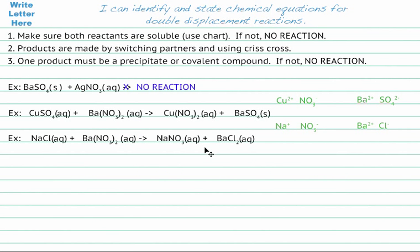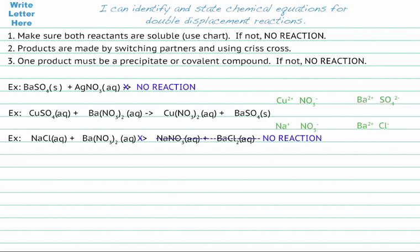So both products are aqueous. Our rule says one product must be a precipitate or a covalent compound. Neither product is covalent — both have a metal and a non-metal — and neither is a precipitate. So this reaction actually does not happen. We write an X over it and write no reaction. Sometimes you have to check twice: first with your reactants, then with your products, because things can go wrong at two places with double replacement reactions.